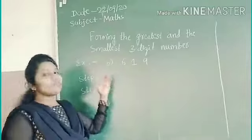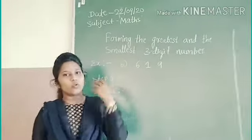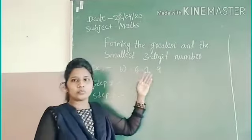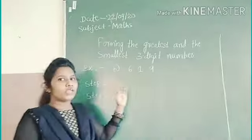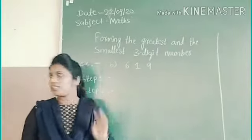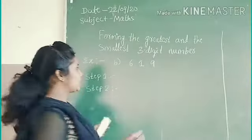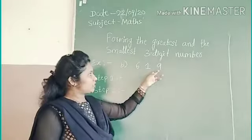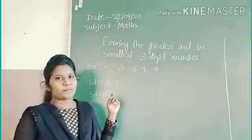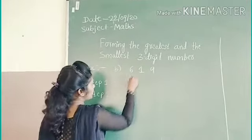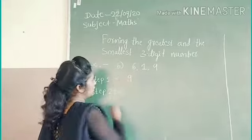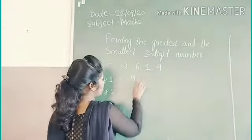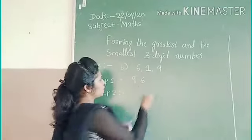When we have to form the greatest number, we always start from the bigger number. First, we have to rearrange these numbers in descending order. Out of these 3 digits, which one is the bigger number? 9 is the bigger number, so I will write 9. And among the remaining 2, which one is bigger? 6. So I will write 6, then 1.